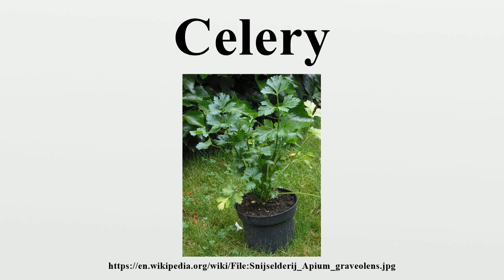The literary evidence for ancient Greece is far more abundant. In Homer's Iliad, the horses of the Myrmidons graze on wild celery that grows in the marshes of Troy, and in the Odyssey there is mention of the meadows of violet and wild celery surrounding the cave of Calypso. A chthonian symbol among the ancient Greeks, celery was said to have sprouted from the blood of Kadmilos, father of the Cabeiri — celery chthonian divinities celebrated in Samothrace, Lemnos, and Thebes. The spicy odor and dark leaf color encouraged this association with the cult of death.